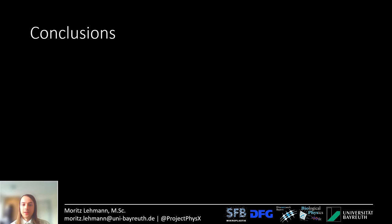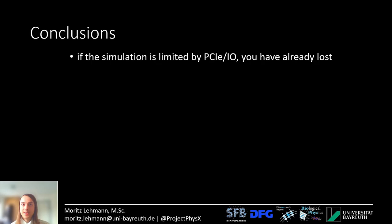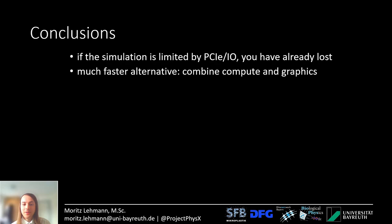In conclusion, if the simulation itself is lightning fast but its performance is bottlenecked by PCI Express transfer or input-output, then you have already lost — overall the simulation takes weeks or even months. The alternative is to do compute and graphics on the same GPU at the same time, which is much more efficient and much faster. The one take-home message for you today is that rendering is just another form of compute — if a device can do compute applications, it can do rendering as well.